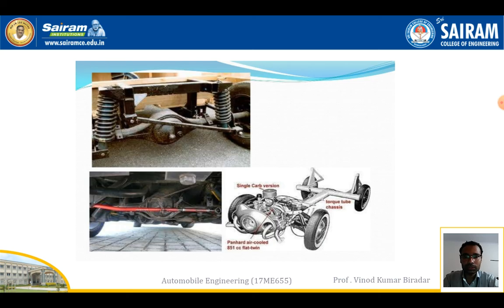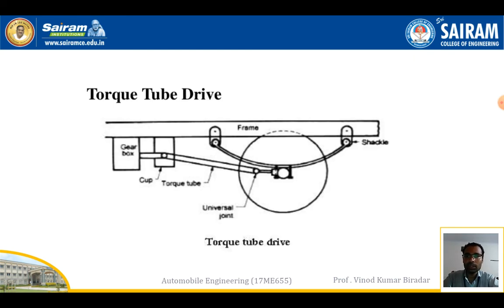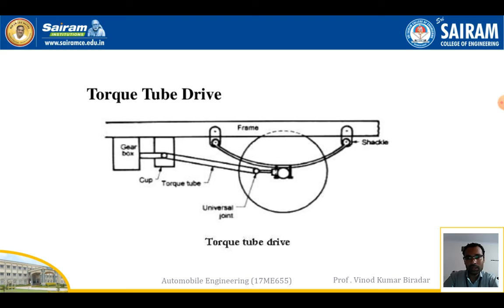Both the Hotchkiss drive and the torque tube drive are used for the transmission of power, but the mechanism is different. It is important to practice both diagrams — they look similar but have many differences. In the torque tube drive, only one universal joint is used, connected with a cup shape, near the gearbox. When the engine starts, power from the gearbox is transmitted to the wheel via this universal joint and the torque tube.